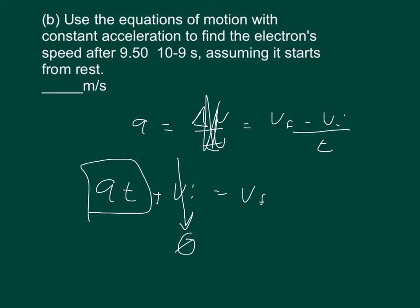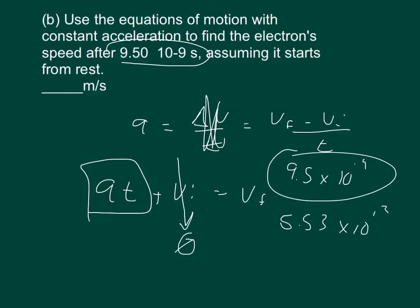We just solved our acceleration. We said it's 5.53 times 10 to the positive 13. It gives us the time as 9.5 times 10 to the negative 9. We're going to multiply that by 5.53 times 10 to the positive 13.